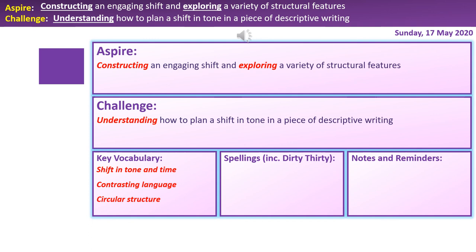That brings us to the end of our third lesson on Paper 1 Question 5, Year 10. To recap our key vocabulary: we've looked at how to create a shift in tone and time, contrasting language, and circular structure. I'm really hoping that everybody has understood how to plan a shift in tone in a piece of descriptive writing and has been able to construct an interesting and engaging shift, exploring a variety of structural features. Thank you for taking part in today's lesson. Tomorrow we're going to continue focusing on the second half of our writing and finish off the piece we started last week. Have a good day!